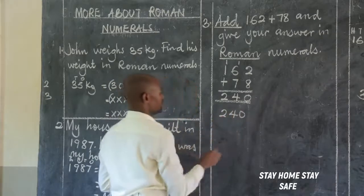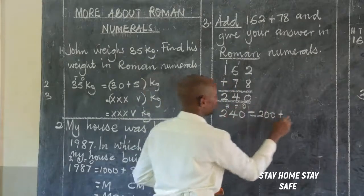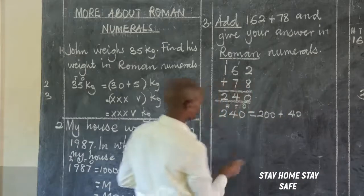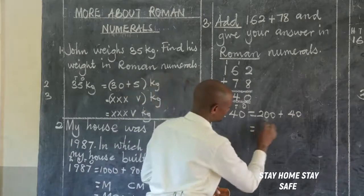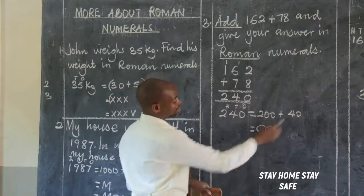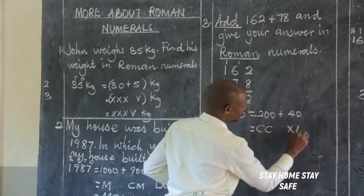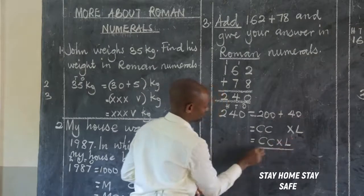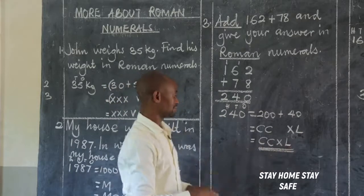240 expanded: 2 times 100 is 200, 4 times 10 is 40, 0 times 1 is 0. How do we write 200? Got by repeating: C, C. What about 40? Got by subtraction: 10 subtracted from 50, giving XL. Therefore, 240 gives us C, C, X, L — CCXL as our answer.